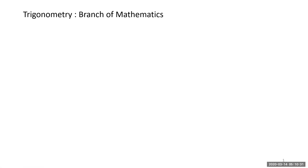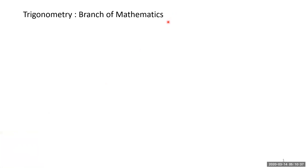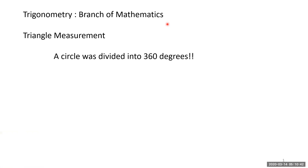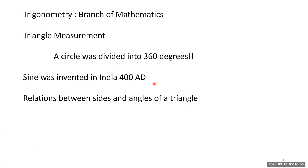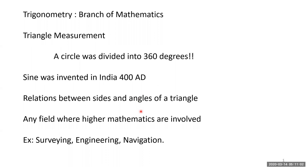Today we will study about trigonometry — it's a branch of mathematics. We are going to study about triangle measurement: the sides and angles in a triangle. A circle was divided into 360 degrees and was used to measure triangle angles. Sine was invented in India around 480. The relation between sides and angles of a triangle is basically what we'll study in the first stage.